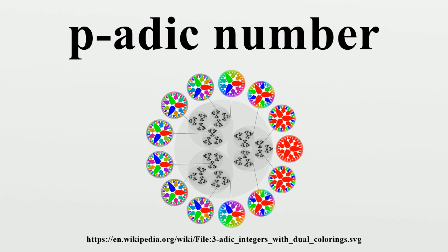Ten-adic numbers use a similar non-terminating expansion, but with a different concept of closeness. Whereas two decimal expansions are close to one another if their difference is a large negative power of 10, two ten-adic expansions are close if their difference is a large positive power of 10. Thus, 3,333 and 4,333, which differ by 10^3, are close in the ten-adic world, and 33,333,333 and 43,333 are even closer, differing by 10^7.